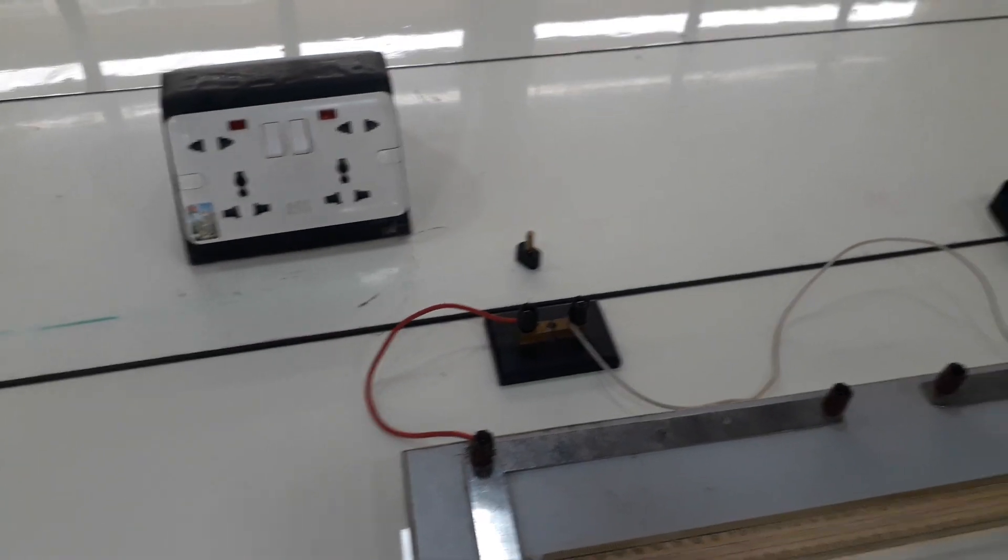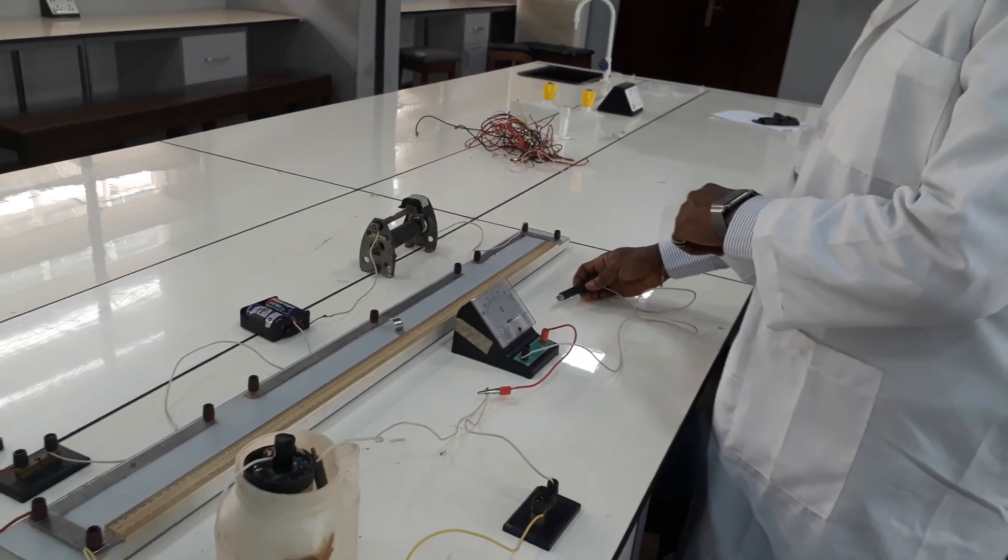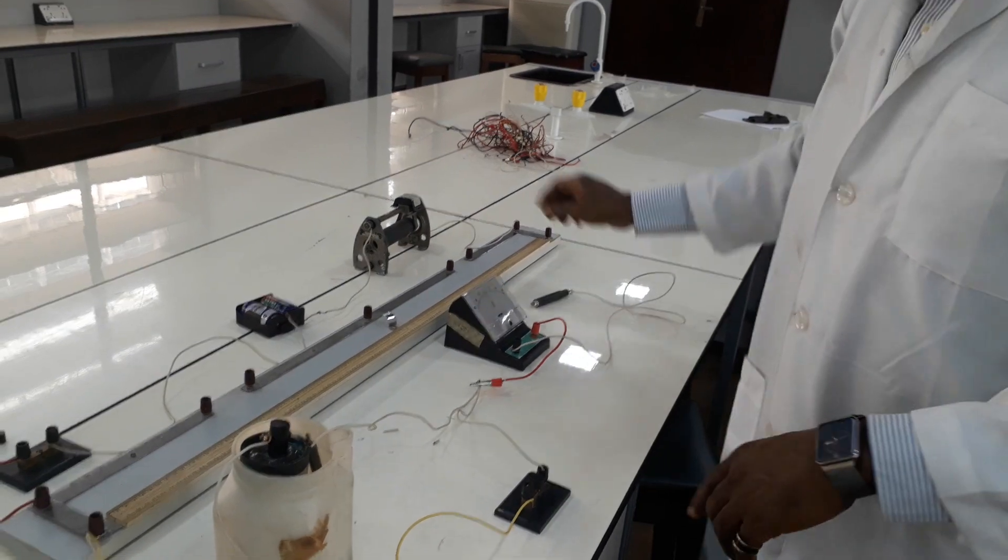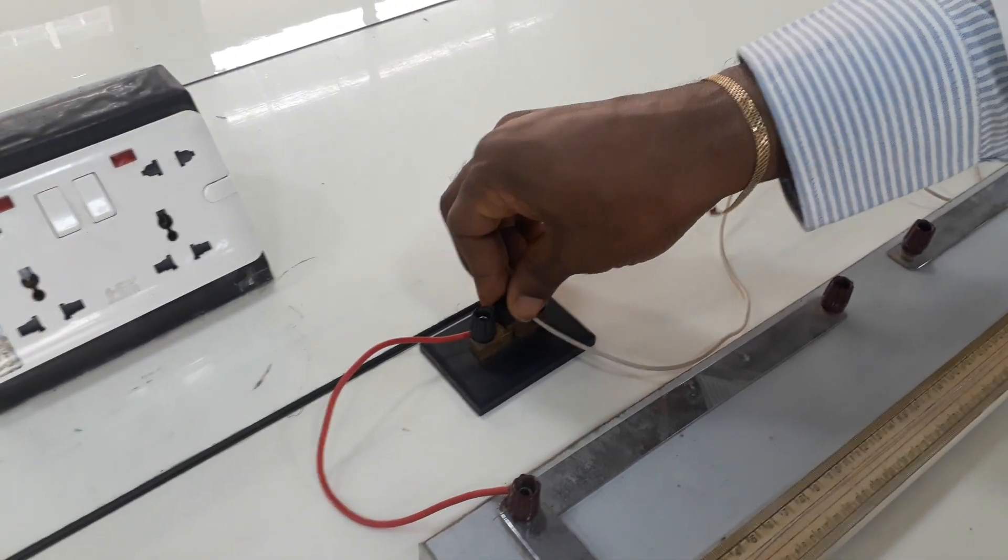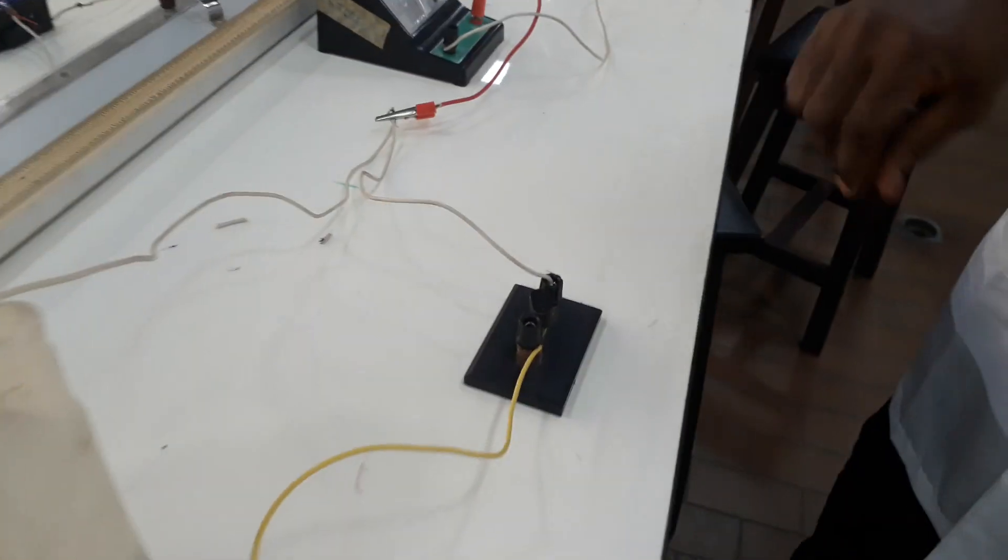Before I start, I have to check and be sure the direction of flow of the current. And to do that, first of all, I have to close my key. I have closed my K1. I have closed my K2.